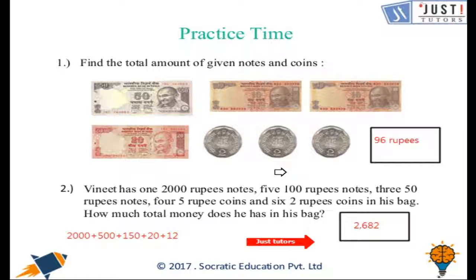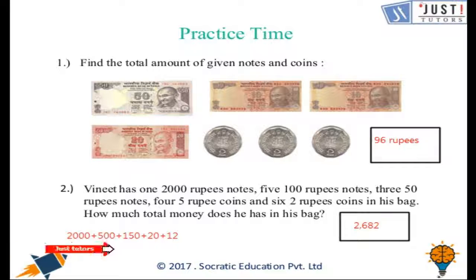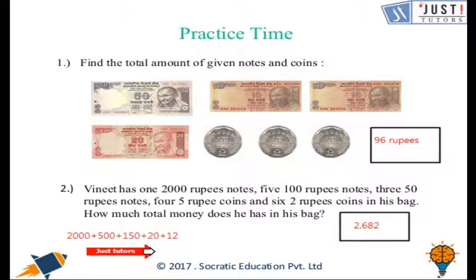The answer for question 1 is 96 rupees. For question 2: 1 two-thousand rupee note is 2000; 5 hundred rupee notes make 500; 3 fifty rupee notes make 150; 4 five rupee coins make 20; and 6 two rupee coins make 12. When you add all of them together, you get 2682 rupees.